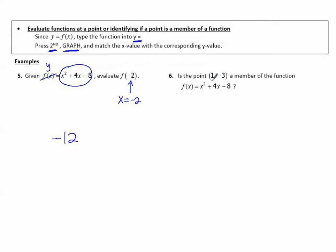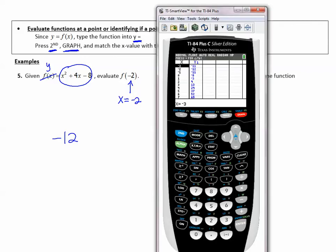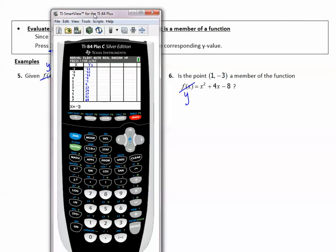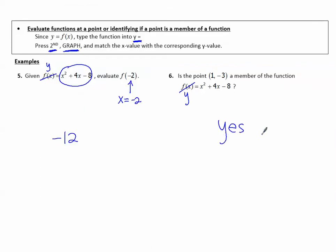Number 6: is the point (1, negative 3) a member of the function f(x) equals x squared plus 4x minus 8? Since f(x) means y, I go back to the same table already entered. I look to see if 1 goes with negative 3 — and in the table I see that x equals 1 matches y equals negative 3. That input does go with that output, so yes, this point is a member of the function. Thanks for watching, have fun practicing.